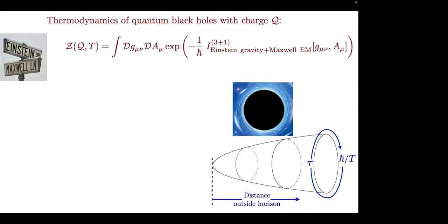It's so dense and so charged that spacetime distorts so much that there's a horizon. I'm outside the horizon, so there's no matter or charge outside the horizon. I'm just solving the vacuum equations of Einstein and Maxwell with the boundary condition that somewhere in the center there is a net charge and a net mass. I don't need to know anything about what's in there other than the mass and the charge, because I'm far away from it.